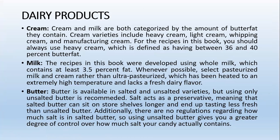Now, dairy products. Cream and milk are both categorized by the amount of butter fat they contain. Cream varieties include heavy cream, light cream, and whipping cream. For candy recipes, you should always use heavy cream, which is defined as between 36–40% butter fat. For milk, the recipes refer to whole milk containing approximately 3.5% fat. Select pasteurized rather than ultra-pasteurized milk and cream, as ultra-pasteurized has been heated to an extremely high temperature and lacks fresh dairy flavor. Butter is available in salted and unsalted form; unsalted butter is recommended because salted butter can taste less fresh, and there are no regulations regarding how much salt is in salted butter, so unsalted butter gives greater control over salt content.